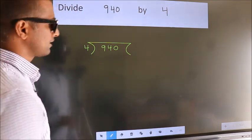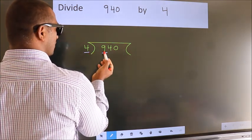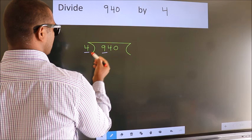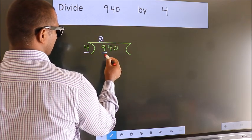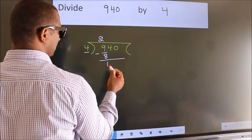Next, here we have 9, here 4. A number close to 9 in the 4 table is 4 twos, 8. Now we should subtract. We get 1.